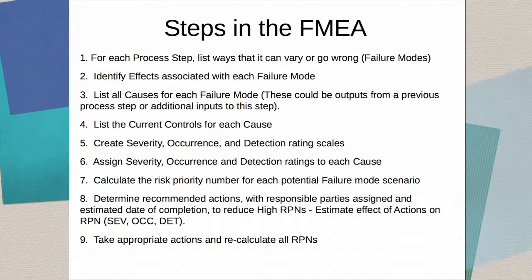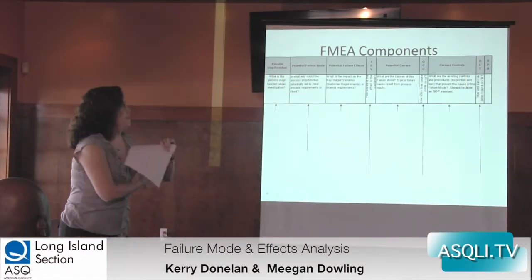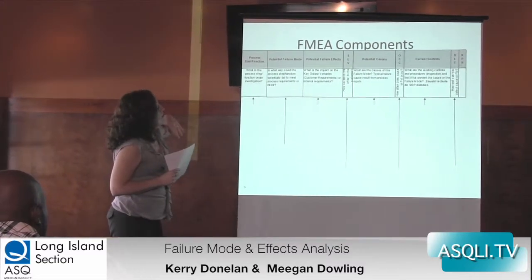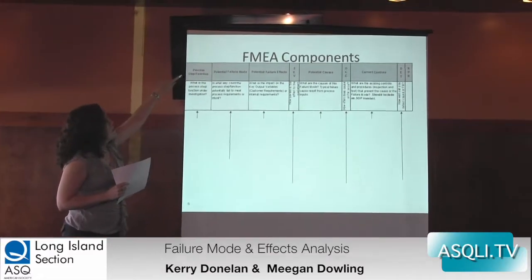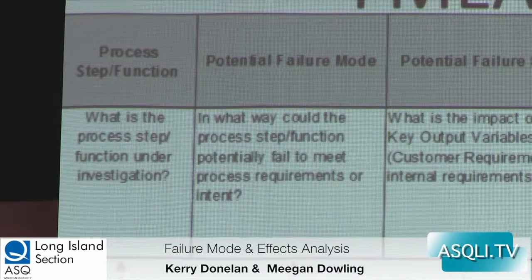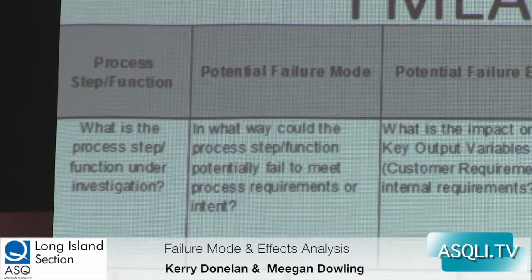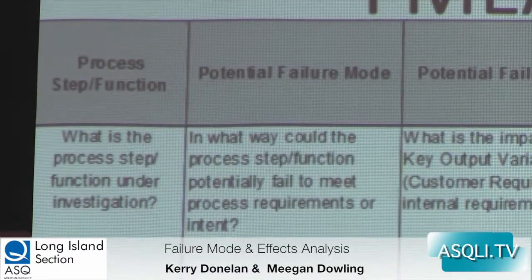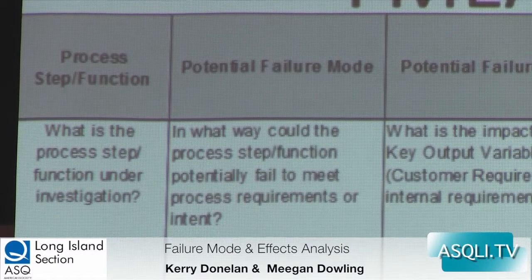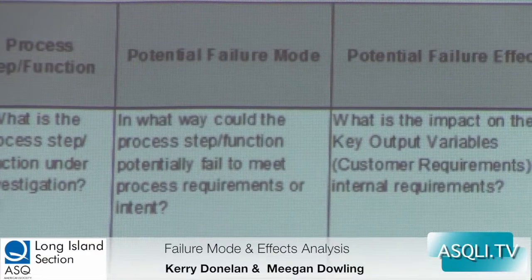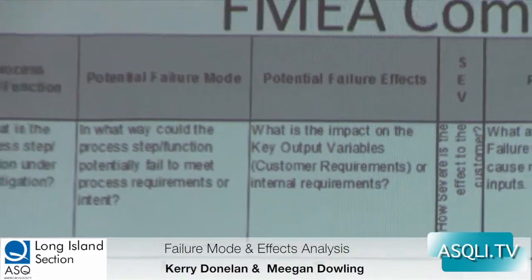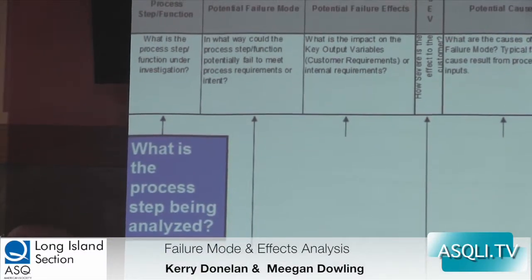So here are the steps. I'm going to go through them where you can see the document. This is what the left-hand side of the FMEA template looks like. The first part is what your process step or function is. The whole document is based on your process steps — that's the first thing you're going to do. For those familiar with Six Sigma tools, you can use a process map to go through your steps — a high level or detailed process map.